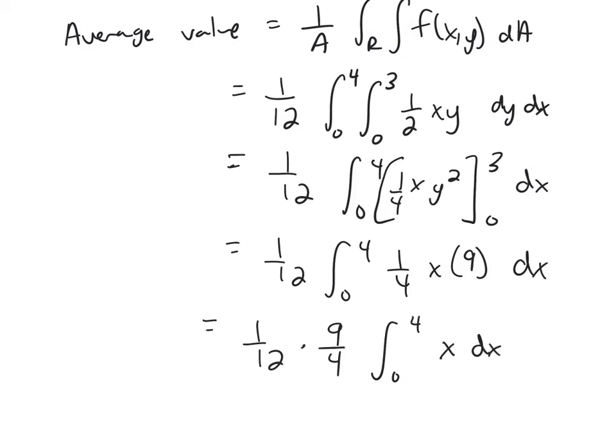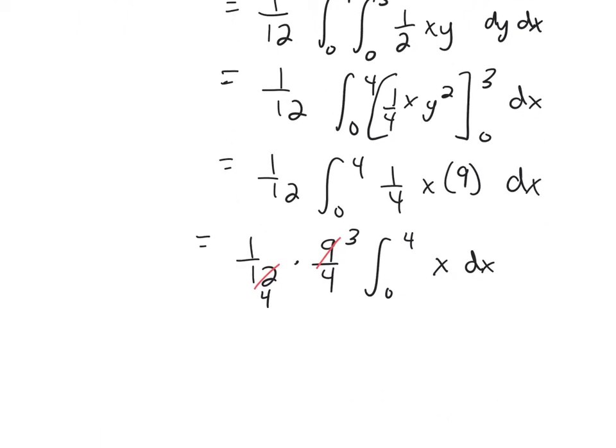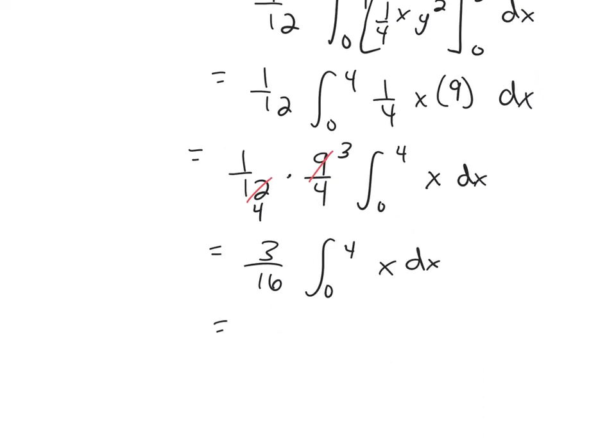So here if I simplify, this 9 will reduce with this 12 to be 3 over 4. So it looks like I have (3/16) times the integral from 0 to 4 of x, which will be (3/16)(x²/2).